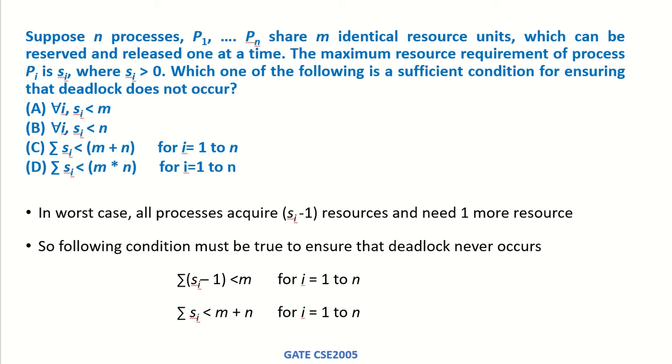Suppose n processes P1 to Pn share m identical resource units which can be reserved and released one at a time. The maximum resource requirement of process Pi is Si where Si is greater than 0.